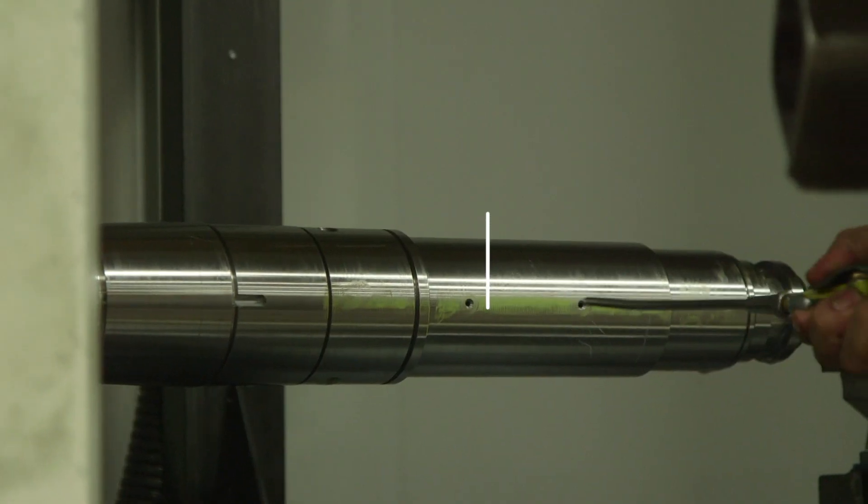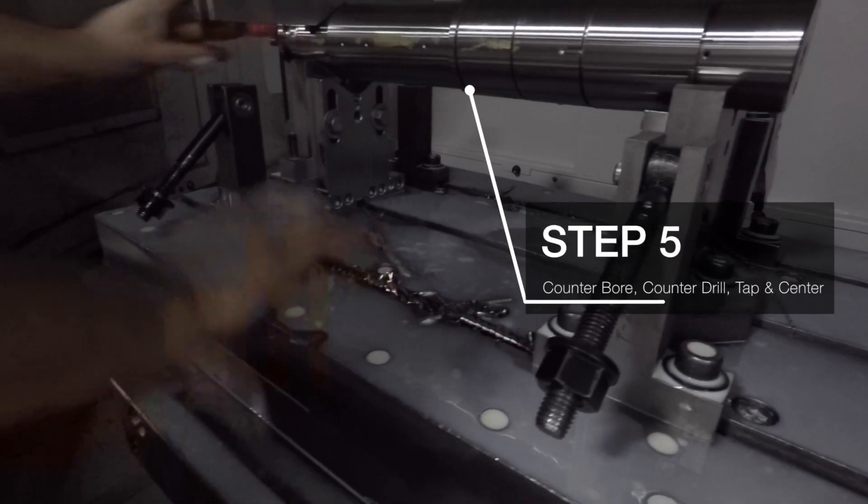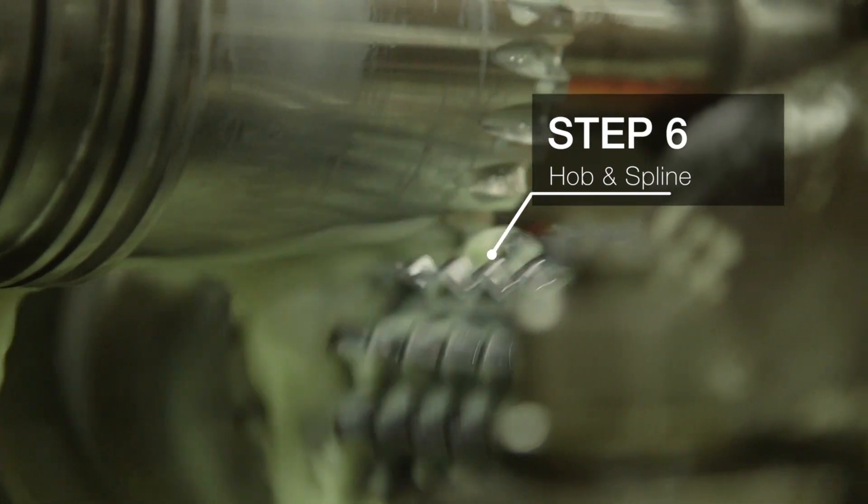Our next stage takes us to the counter-bore and counter-drilling phase. These steps are required for component pieces to be mounted to the shaft. To prepare for shaft placement within a gear, exterior grooves are formed through a hob and spline process.